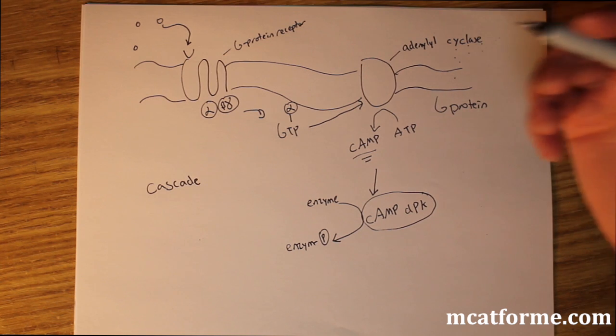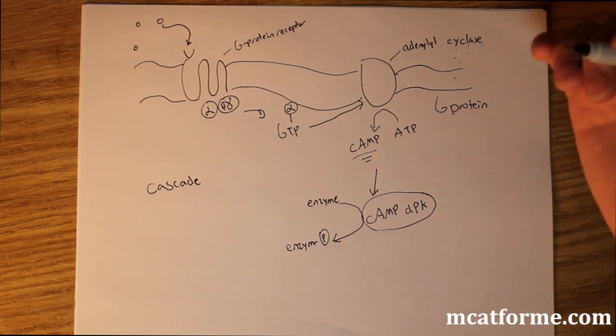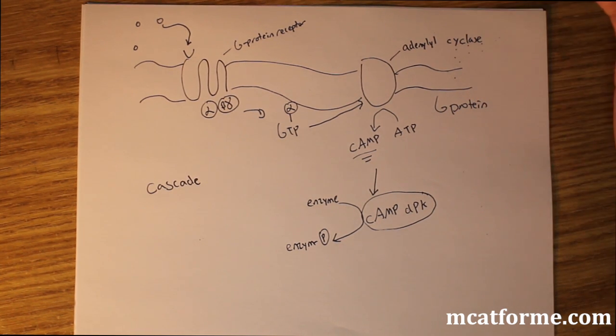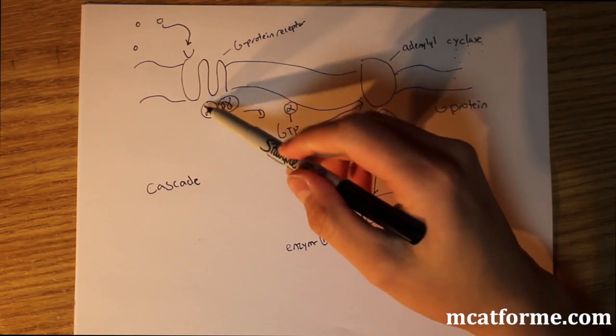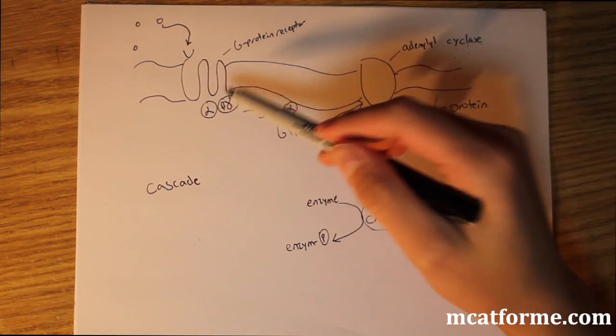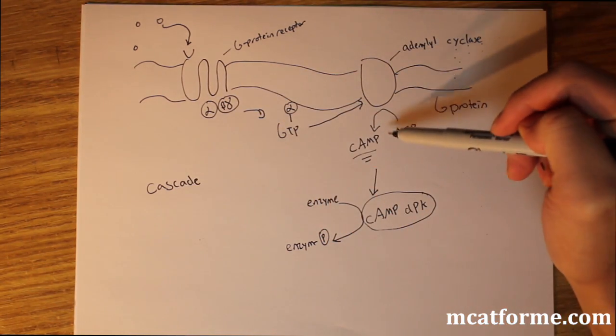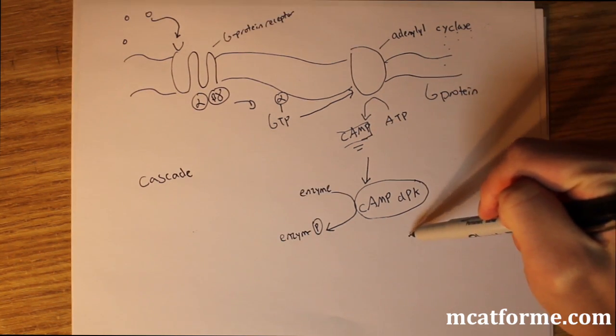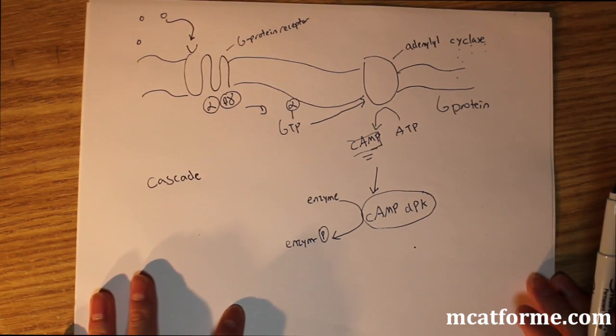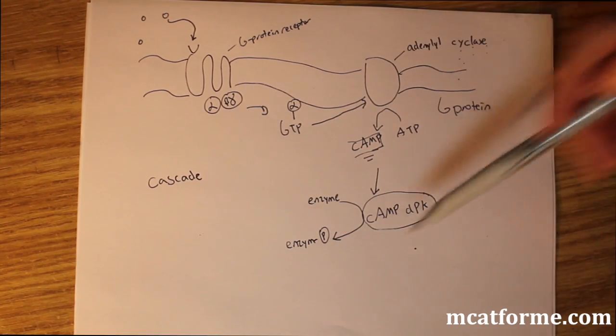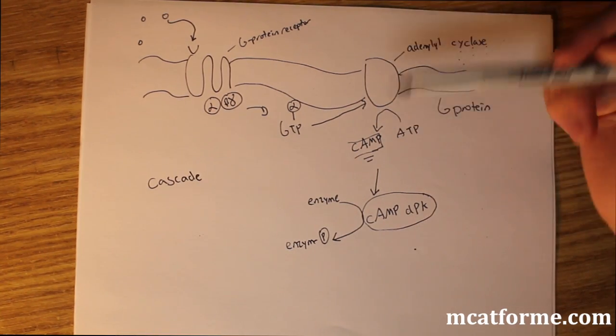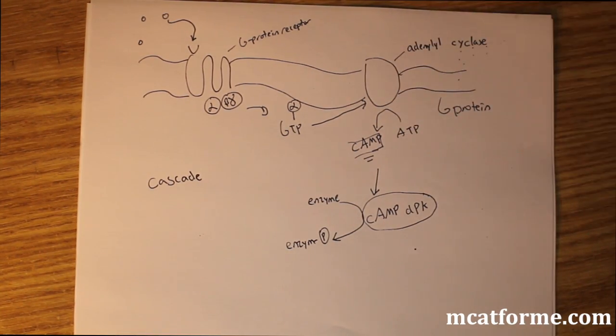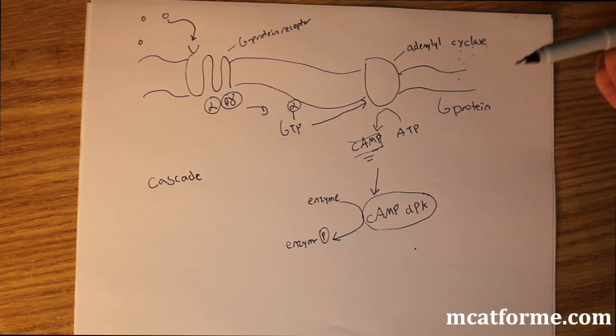Just remember basically how this will work. It's fairly important on the MCAT. Not so much memorizing what happens, not so much memorize that there's alpha, beta, gamma. But we should recognize some of these terms like cyclic AMP, the cyclic AMP dependent protein kinase, and the G protein. Everything else is kind of just added information, but especially what we saw on the first page will be very important for the MCAT.